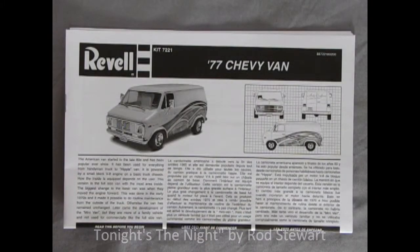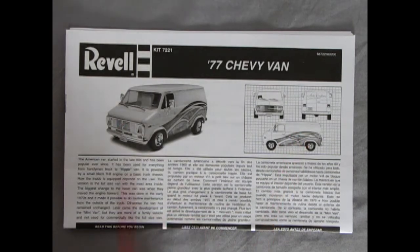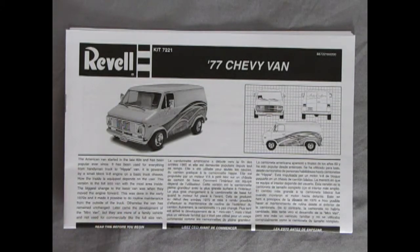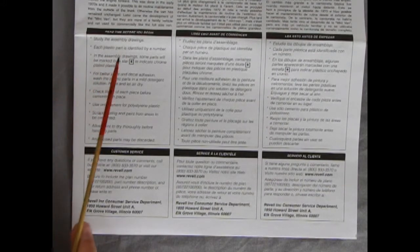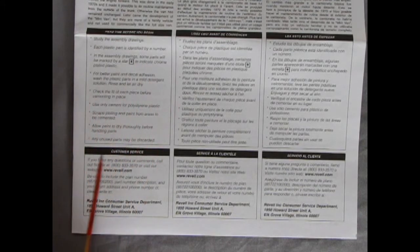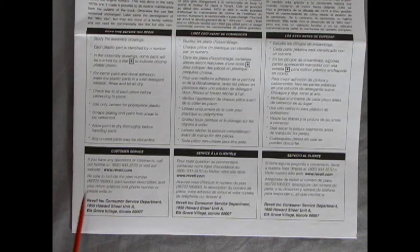Tonight's the night we're gonna take a look at these great instruction sheets and as you can see here we have a blueprinted type sketch of the van as well as a photograph of the model kit and then a great history of how the American van started and what it was like in the 70s. Revel has also given us a few rules about this model kit such as study the assembly drawings, each plastic part is identified by a number and so on and so forth. Any unused parts may be discarded but hey we're all model builders, we know that's a lie!